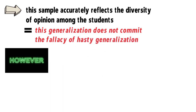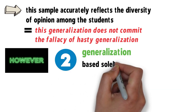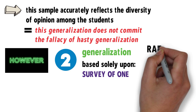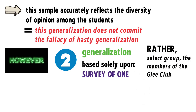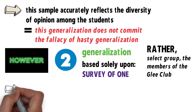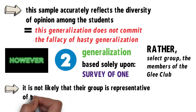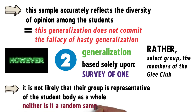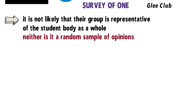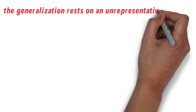However, in the second example, the generalization is based solely upon a survey of one rather select group — the members of the Glee Club. Although their preferences should be considered, it is not likely that their group is representative of the student body as a whole. Neither is it a random sample of opinions. Hence, the generalization rests on an unrepresentative sample.